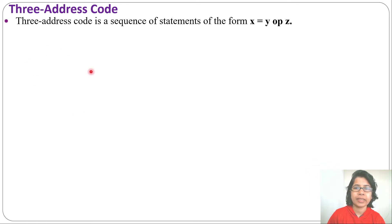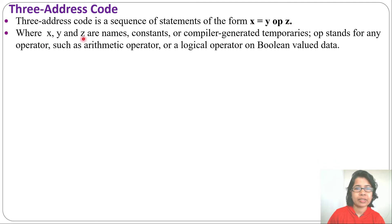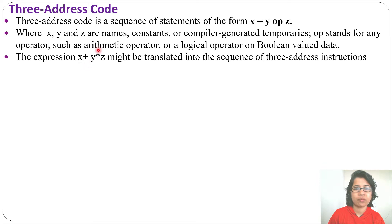Three-address code is a sequence of statements of the form x = y op z, where x, y, z are names, constants, or compiler-generated temporaries like t1, t2, t3. Op stands for arithmetic or logical operators. Let's see one example: x + y * z. How will I write this in three-address instruction? There are two operators, one is plus, another is multiplication.